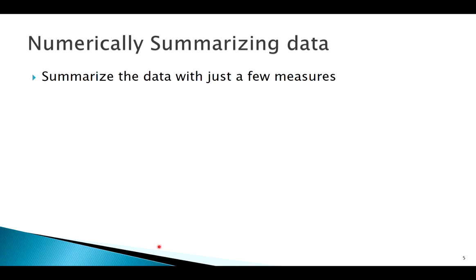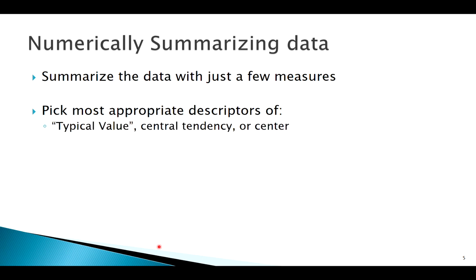So what are the most important things to summarize? Well, typically we're most interested in the center or the most typical value, the central tendency of a data set. There are multiple ways to quantify that, and we're also interested in a variable's variability, the variation that exists there. And oftentimes we're also interested in, is there anything that kind of sticks out to us? These are things that we might refer to as outliers.